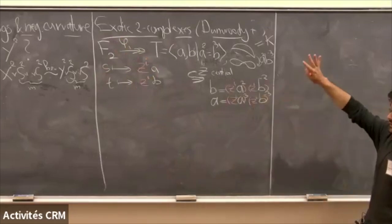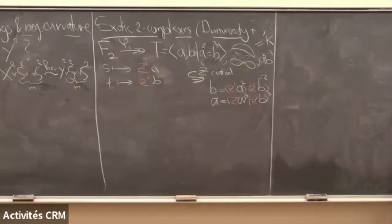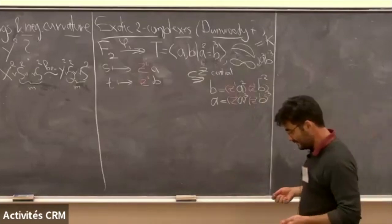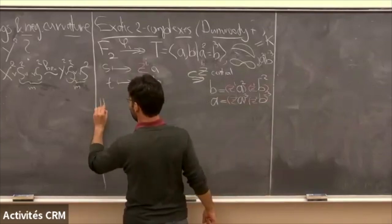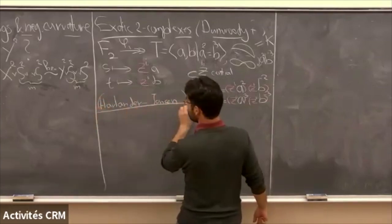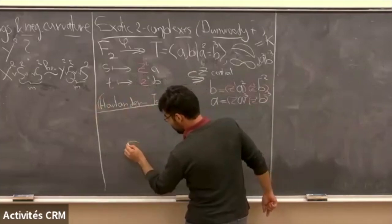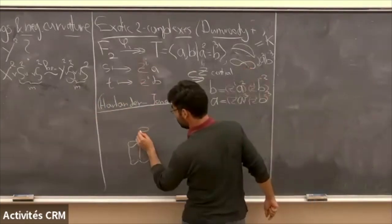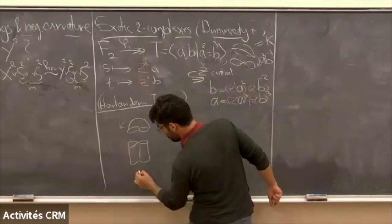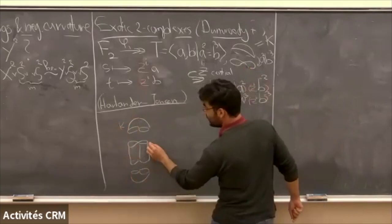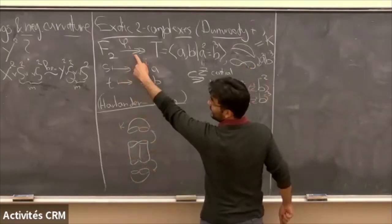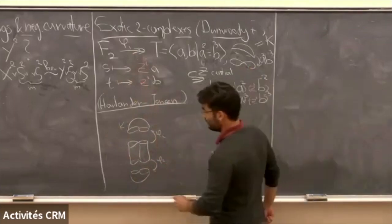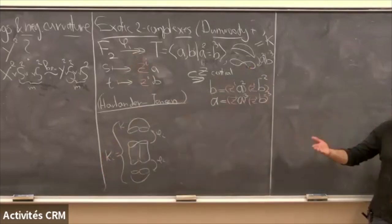The first person to construct such complexes was Dunwoody. Later, people came up with similar constructions. The one I'll tell you about is due to Krolander and Jensen. You take the figure eight crossed with an interval, then glue two copies of the standard complex K to it — one at the top and one at the bottom — via one of these φ_i maps, the same φ_i at top and bottom. For each i, this gives you a two-complex K_i — an infinite family of two-complexes, all with the same Euler characteristic.